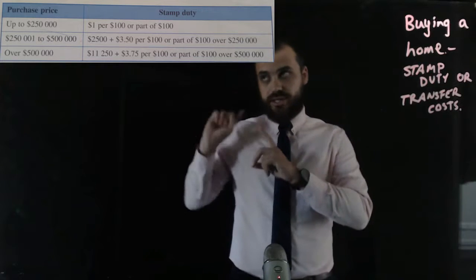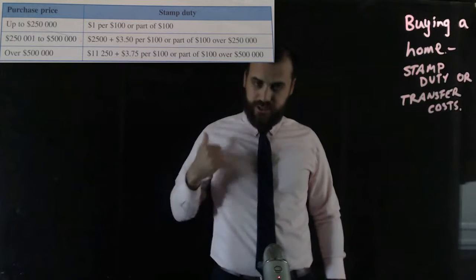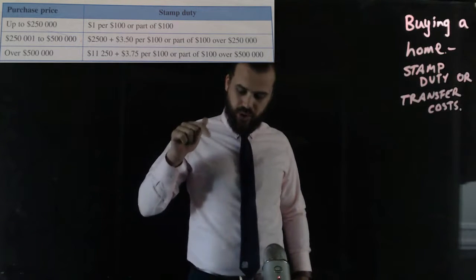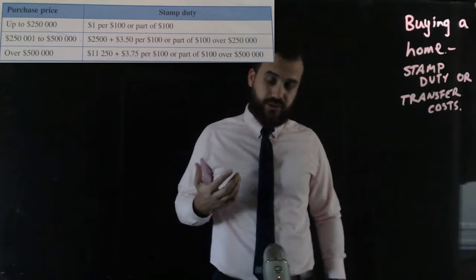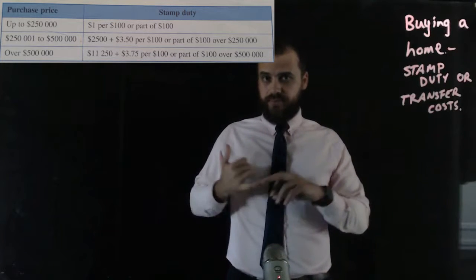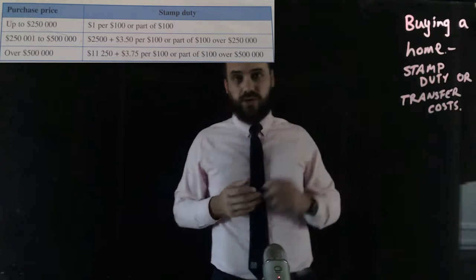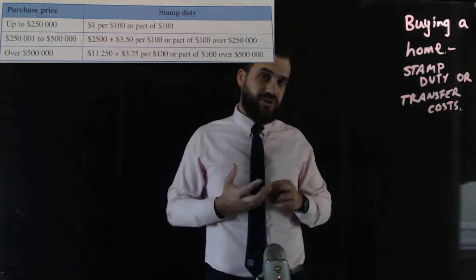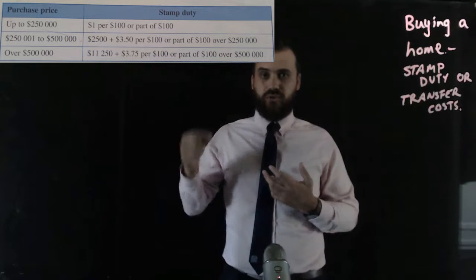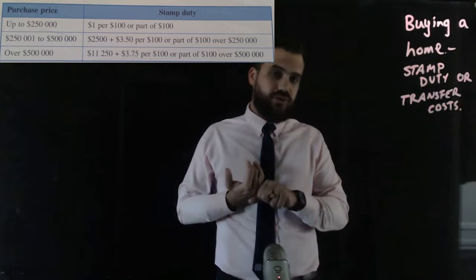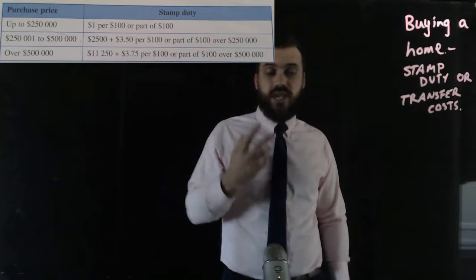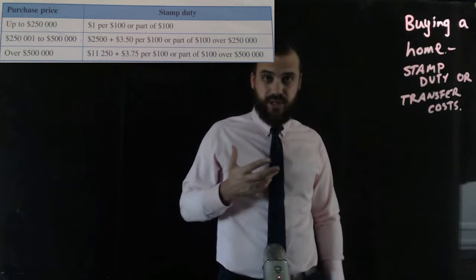Stamp duty is calculated using a table. It says up to two hundred and fifty thousand dollars, the stamp duty is one dollar per hundred or part of one hundred. So if the house was one hundred dollars, you'd pay one dollar in stamp duty. If the house was two hundred dollars, you'd pay two dollars. But if the house is one hundred and seven dollars, you pay two dollars in stamp duty.